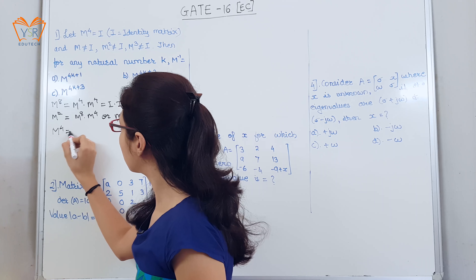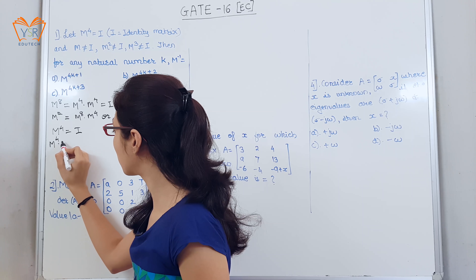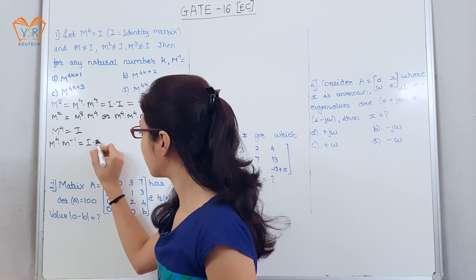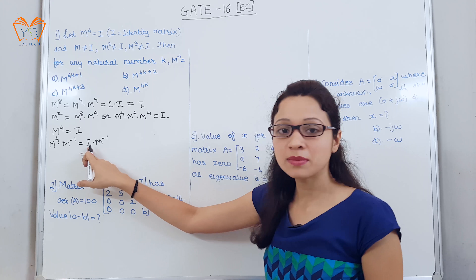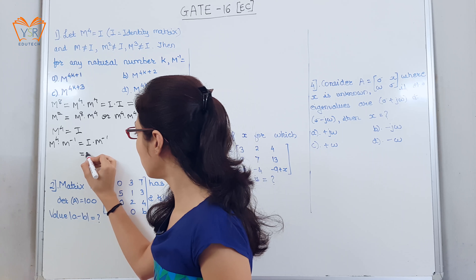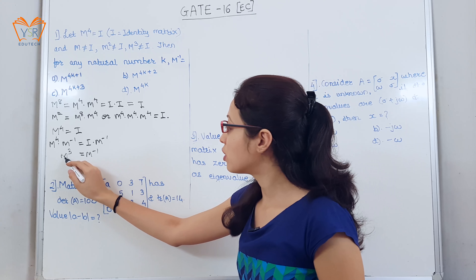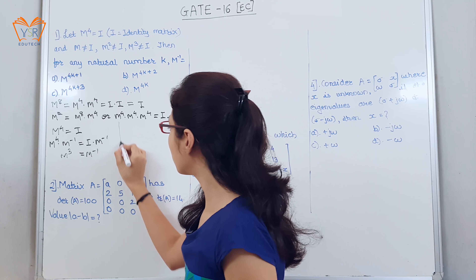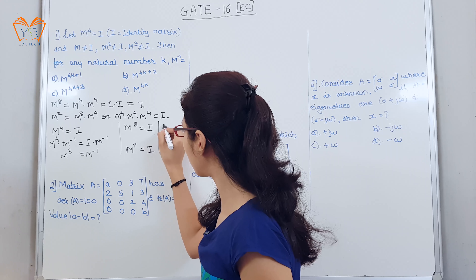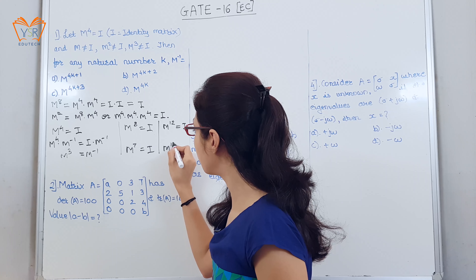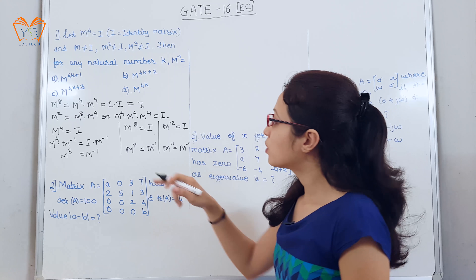Now, given m⁴ = I, we multiply both sides by m inverse: m⁴ × m⁻¹ = I × m⁻¹. We know that any matrix multiplied by the identity matrix gives the same matrix. So the left side gives m³, meaning m³ = m⁻¹. Similarly, for m⁸ we get m⁷ = I, and for m¹², m¹¹ = m⁻¹.